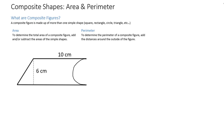In this lesson we're going to talk about composite shapes and finding the area and perimeter. A composite shape is a shape or figure made up of more than one simple shape — putting together a square, rectangle, triangle, etc. A real simple example is when you're a kid drawing a house: a triangle on top, a square on the bottom — that's a composite shape.